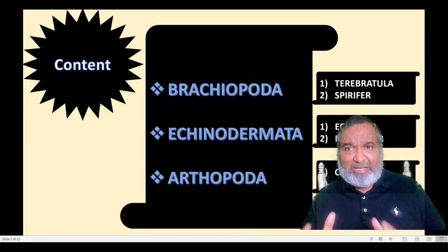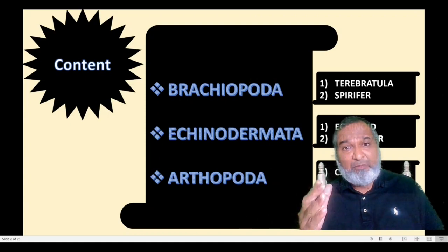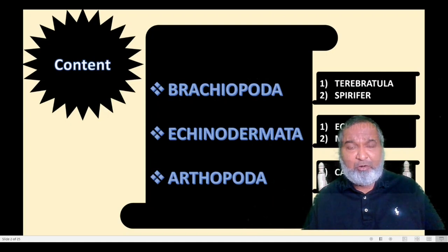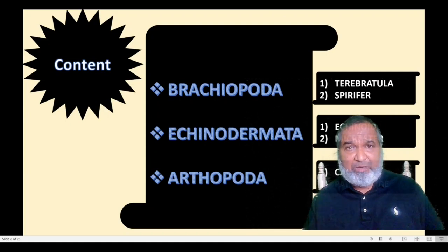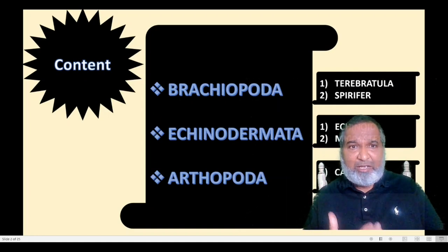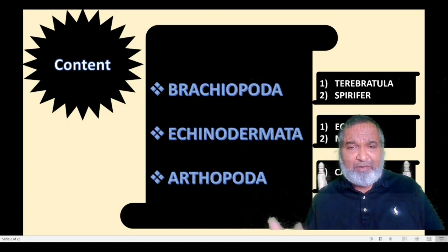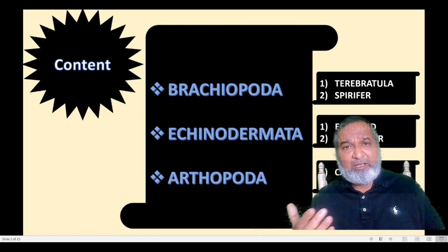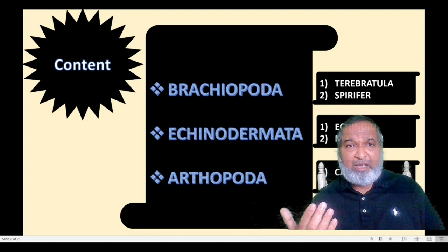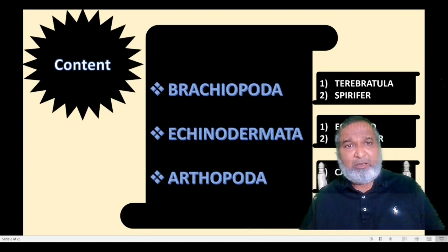These six specimens we are going to study from three different phyla. In the earlier first practical of Palaeontology we saw Phylum Mollusca — class Lamellibranchia with Arca, Unio, and Pecten; class Gastropoda with Turritella and Physa; and class Cephalopoda with Nautilus and Ceratites. Now in this practical we are going to see six more. Let's start.